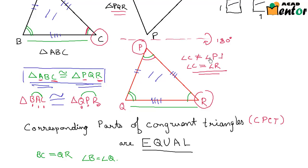Since there is no relationship between angle C and angle P, we cannot comment about any sort of equality between them. The next video will talk about how you can determine whether two triangles are congruent or not.